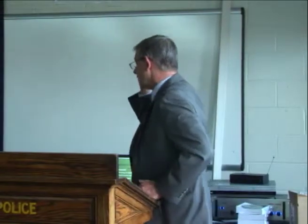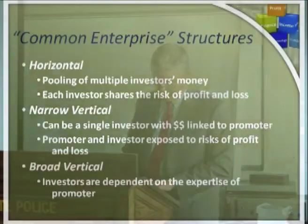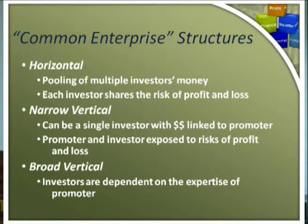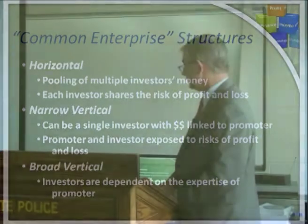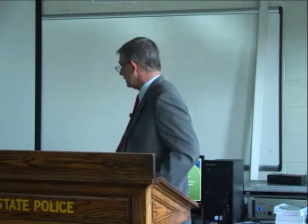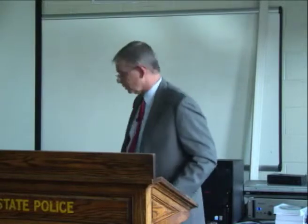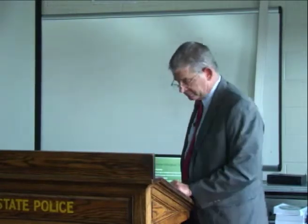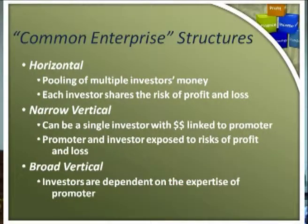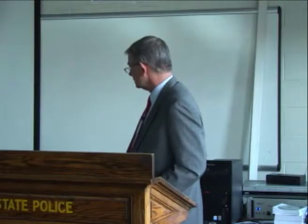In a narrow vertical structure — which, according to my notes, is only applied by the Ninth Circuit — it can be simply a single investor with money linked to the promoter, where between the promoter and the investor they are supposed to be sharing the risk of profit and loss. The final one, called a broad vertical, is a test for the structure of a common enterprise applied only by the Fifth and Eleventh Circuits in the federal court system.